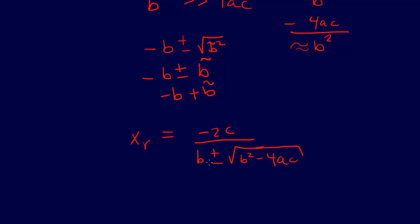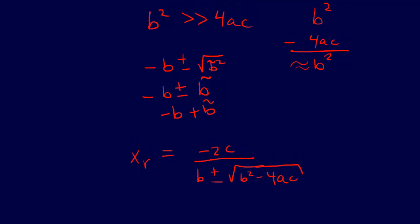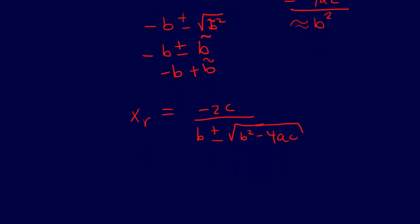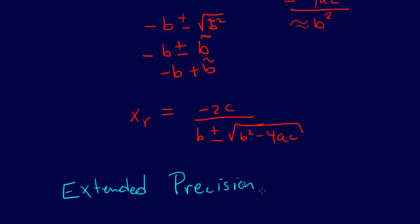So with one formula we have a problem with one root, and with the alternative formula we have a problem with the other root. Sometimes we can introduce alternative formulas, but the more general solution — and it's not always a fix, because it does come with cost — is extended precision, which is the general help. It helps reduce the amount of error that we introduce.